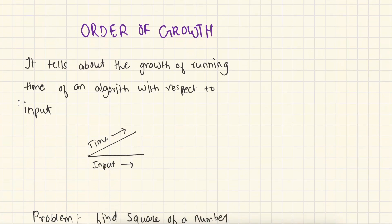What is order of growth? Order of growth tells about the growth of running time of an algorithm with respect to input size. By using order of growth, we can calculate how much running time our algorithm is taking to calculate the result. We provide different types of input to our algorithm and keep increasing the size of the input. As the input size increases, we note down the time taken by the algorithm. We want our running time to grow really slowly — we do not want our algorithm to grow faster.